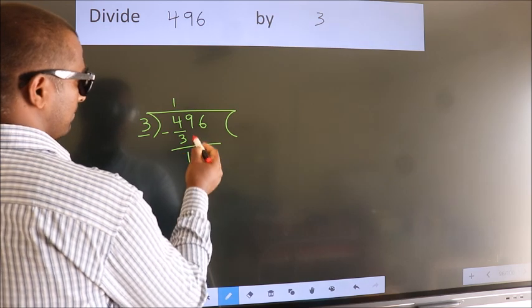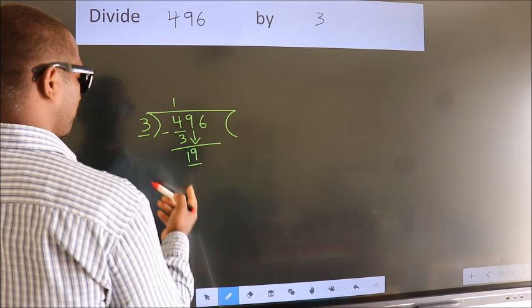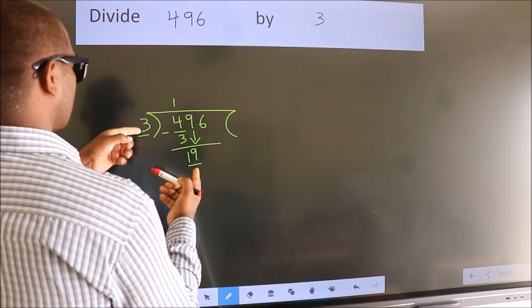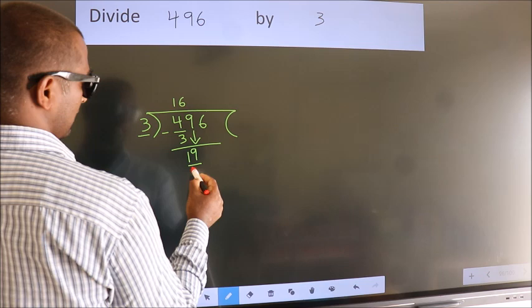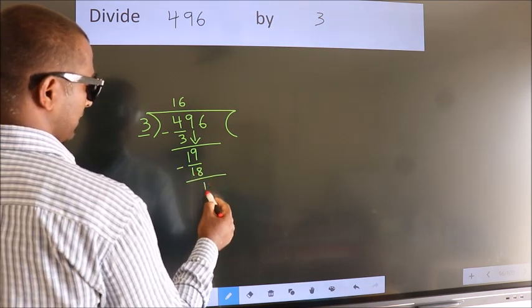After this, bring down the beside number. So 9 down. So 19. A number close to 19 in the 3 table is 3, 6, 18. Now we subtract. We get 1.